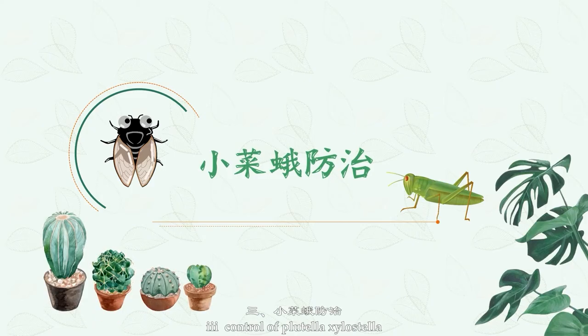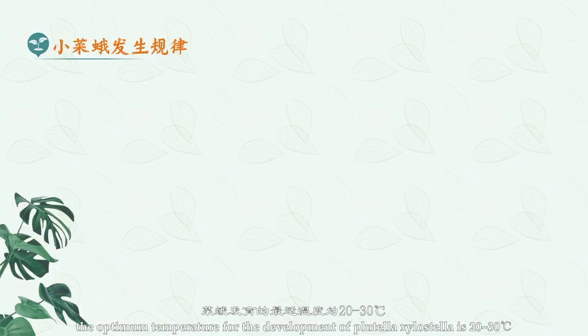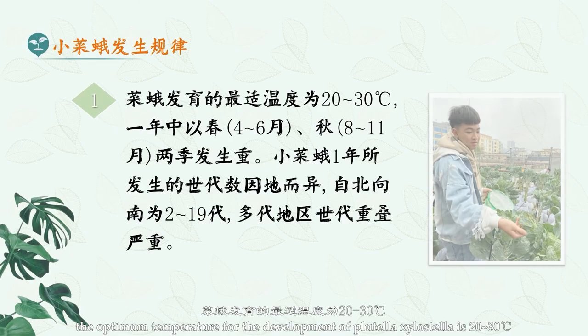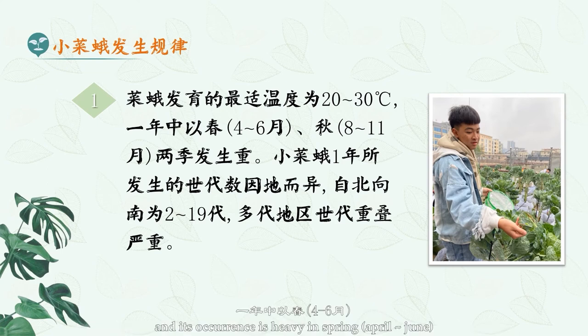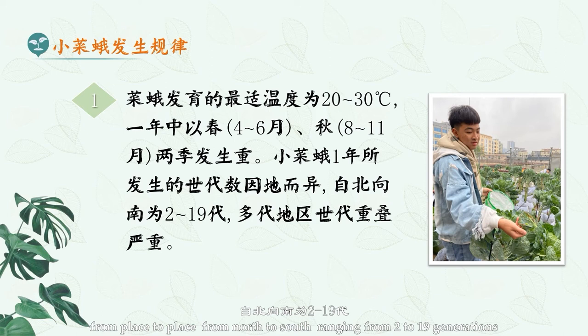Three: control of Plutella xylostella. One: regularity of occurrence. The optimum temperature for the development of Plutella xylostella is 20 to 30 degrees Celsius. Occurrence is heavy in spring (April to June) and autumn (August to November). The number of generations per year varies by region from north to south, ranging from 2 to 19 generations, and generation overlap in multi-generation areas is serious.